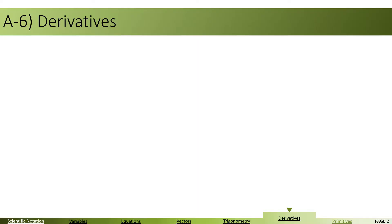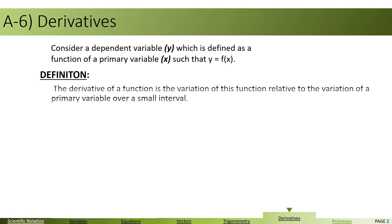Let us assume that y is a dependent variable, which is defined as a function of another variable, a primary variable x. We denote that as y equals f of x. By definition, the derivative of a function is the variation of this function relative to the variation of a primary variable in that function. Here it is x, over a small interval.